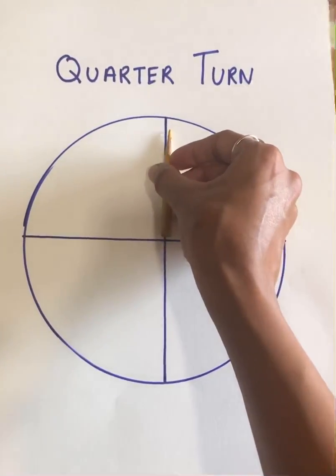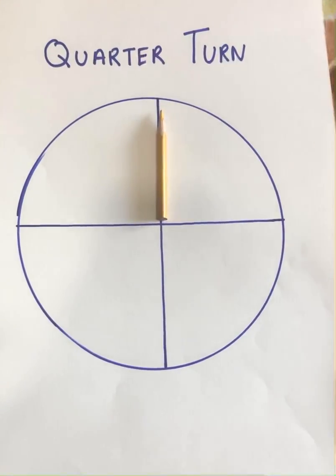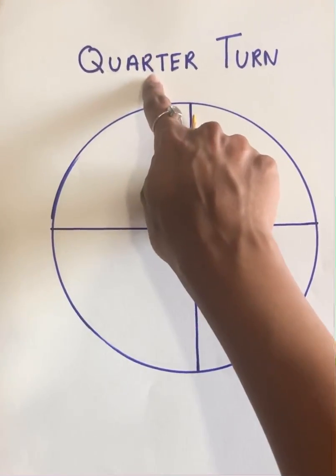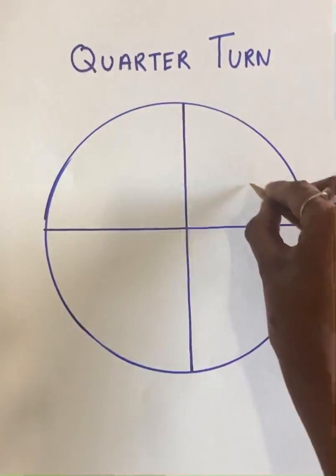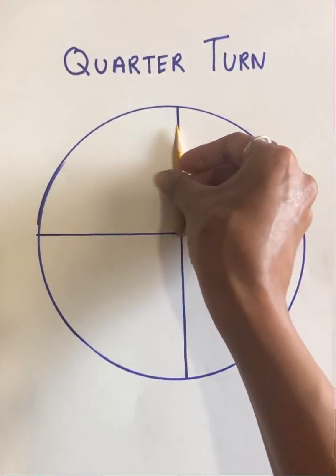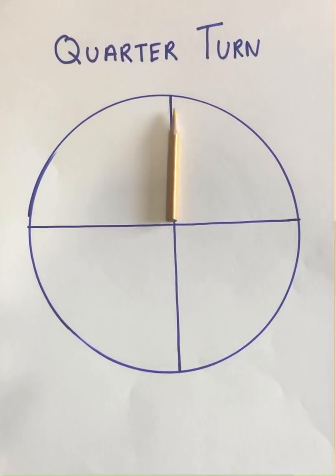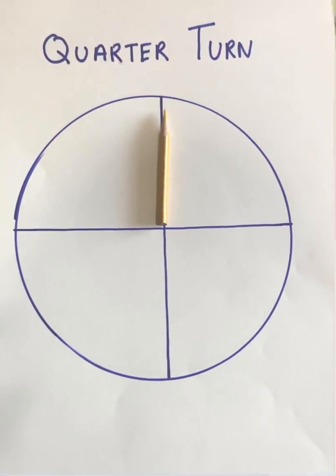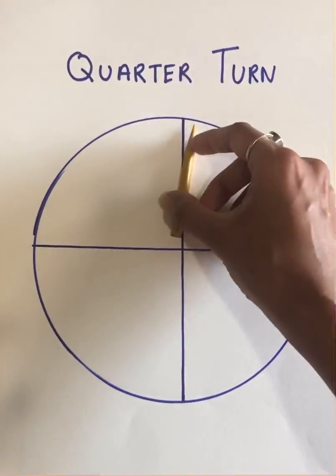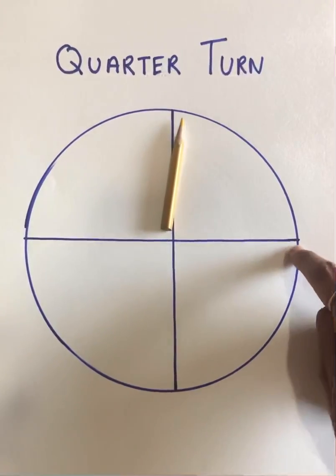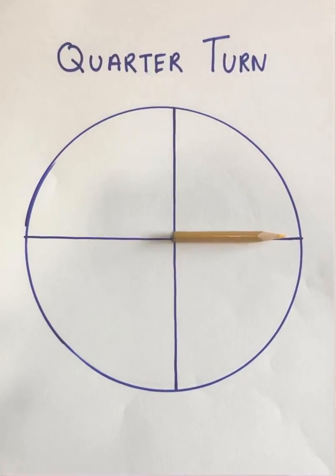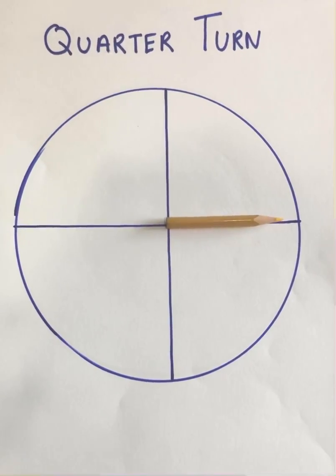I am going to get this color pencil back and place it here. Let's try and understand what we mean by quarter turn. I have taken this circle and divided it into quarters — that means it is divided into four parts. If I ask you to rotate this pencil clockwise quarter turn, starting from here, the quarter will be here. So I have rotated the color pencil quarter turn clockwise.